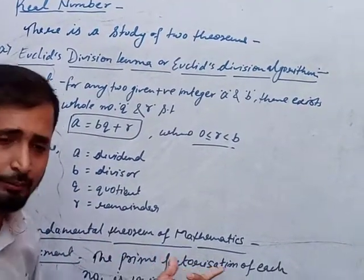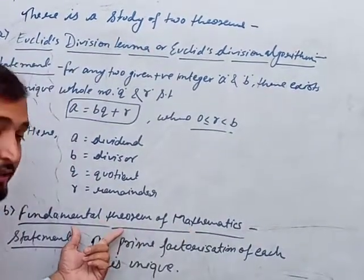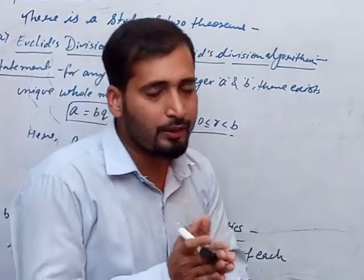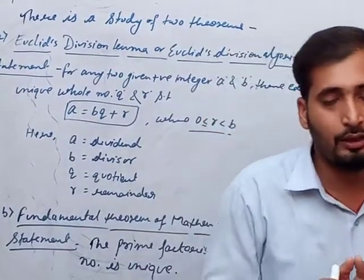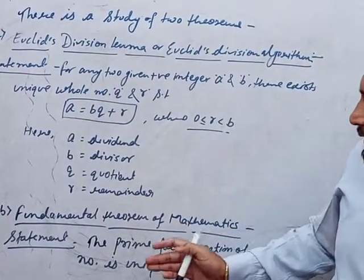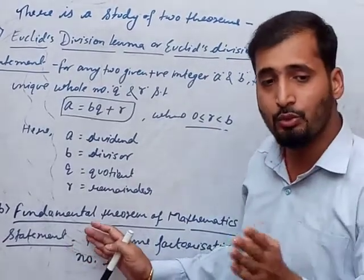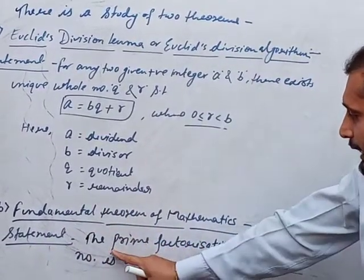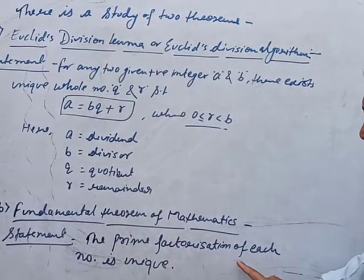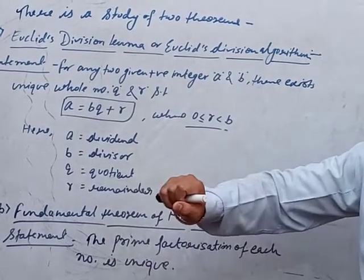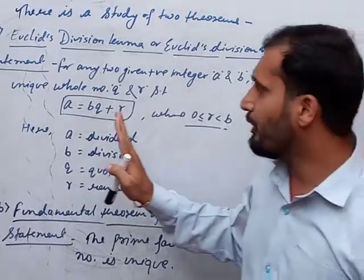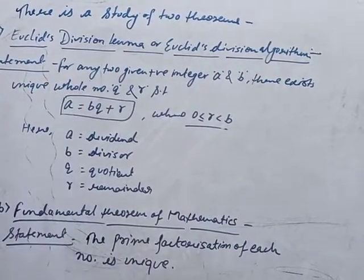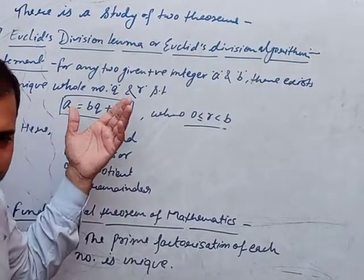The next theorem is the Fundamental Theorem of Mathematics, also known as the Fundamental Theorem of Arithmetic. The statement is: every number has a unique prime factorization. Every number has a unique prime factor, and the prime factorization of each number is unique.